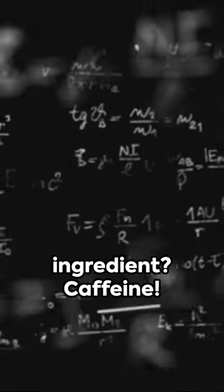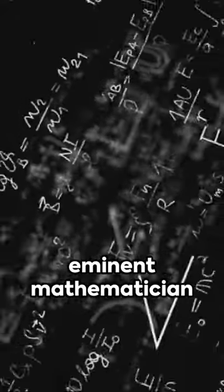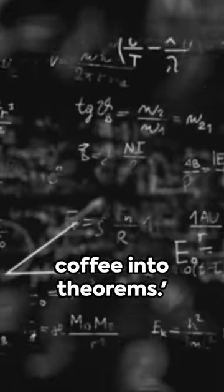The secret ingredient? Caffeine, that's right folks. According to the eminent mathematician Alfred Rennie, a mathematician is a machine for turning coffee into theorems.